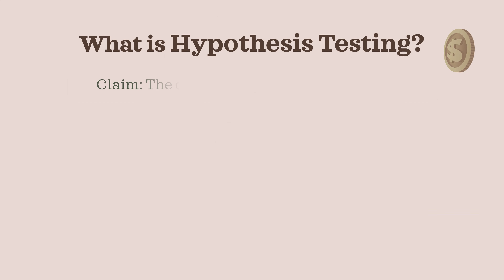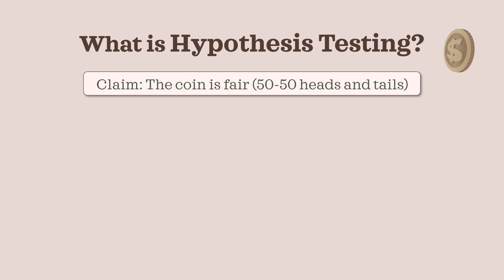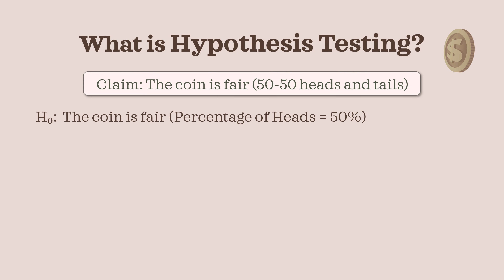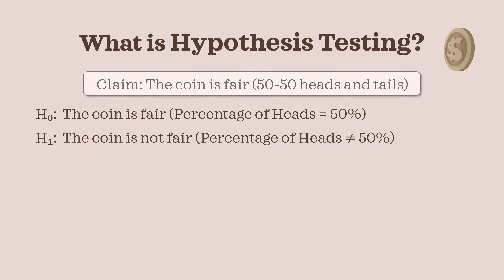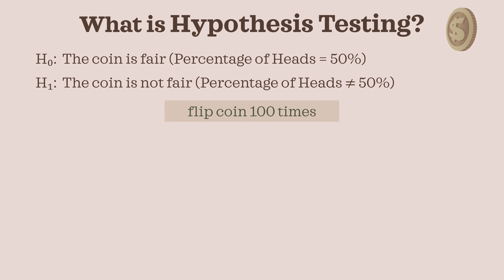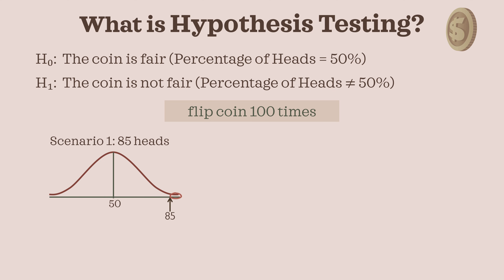Let's try one more intuitive example. Imagine someone claims their coin is fair — that is, 50-50 heads and tails. The null hypothesis would be that the coin is fair: heads and tails are 50-50, or the proportion of heads or tails is 0.5 or 50%. The alternative hypothesis would be that the coin is not fair, or the proportion of heads is not 0.5 or 50%. Suppose you flip the coin 100 times and obtain 85 heads. Even without math, you'll think: that's a lot of heads. The probability of getting 85 heads or more, if the coin were truly fair, is extremely small — much less than 0.05. We will then reject the null hypothesis and conclude that the coin is likely not fair.